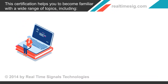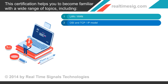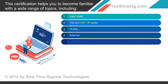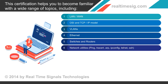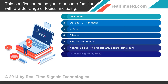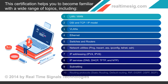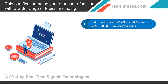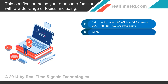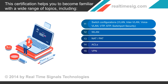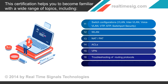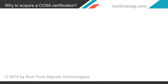This certification helps you become familiar with a wide range of topics, including: LAN/WAN, OSI and TCP/IP Model, VLANs, Ethernet, Switches and Routers, Network Utilities (Ping, Tracert, ARP, IPConfig), Telnet, SSH, IP Addressing (IPv4 and IPv6), IP Services (DNS, DHCP, TFTP, NTP), Subnetting, Routing Protocols (Static Routing, Default Routing, RIP, IGRP, OSPF, BGP), Switch Configurations, VLAN, InterVLAN, Voice VLAN, VTP, STP, SwitchPort Security, LAN, NAT, PAT, ACLs, VPN, and Troubleshooting of routing protocols, Router and Switch Backup and Restore Configuration.